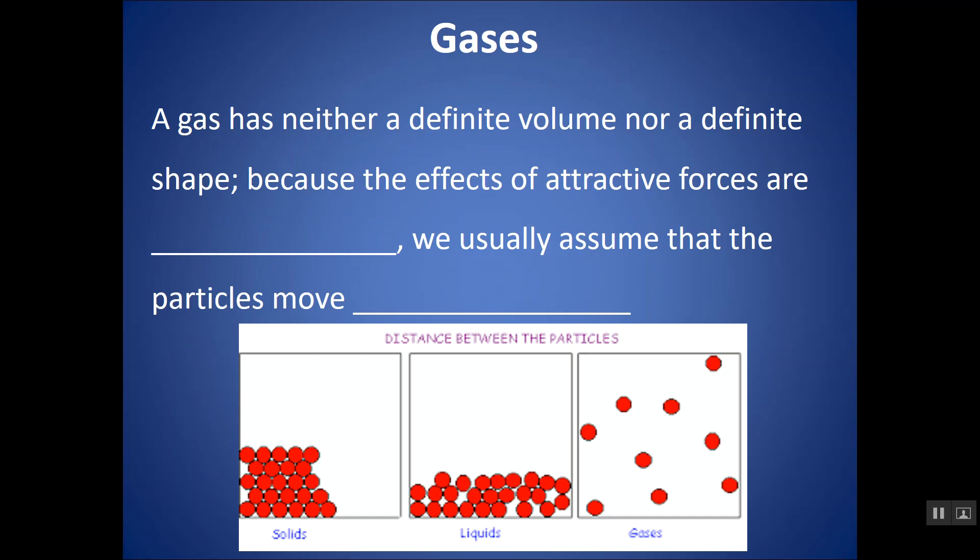Gases have neither a definite volume nor a definite shape. They take that of the container. That's because the attractive forces are very minimal between the particles. So they spread out and take up the volume of the container. We usually assume that the particles move independently of one another. Solids have a definite shape, definite volume, a regular geometric pattern. Liquids, though they are close together, the particles are mobile and they start spreading out more. So they take the shape of the container, though they have their own volume. Gases take the shape and volume of the container. Very spread apart, randomly moving.